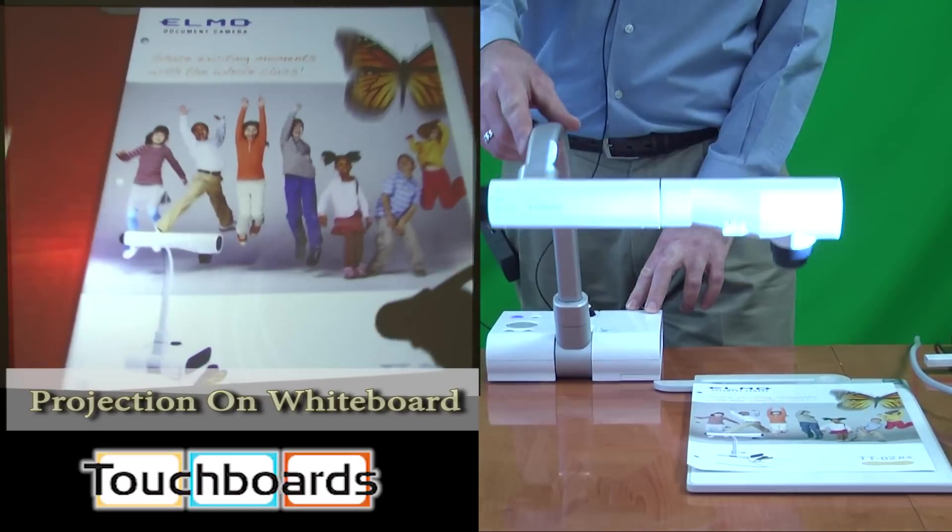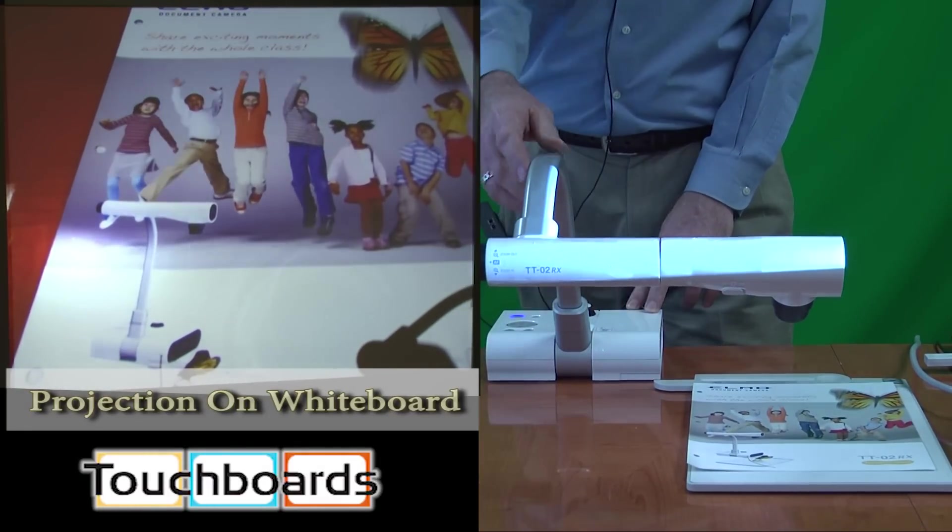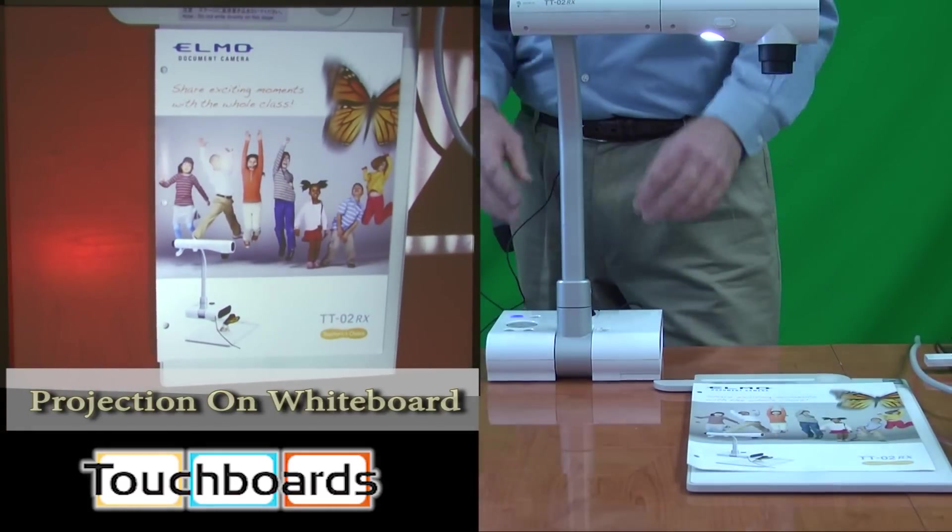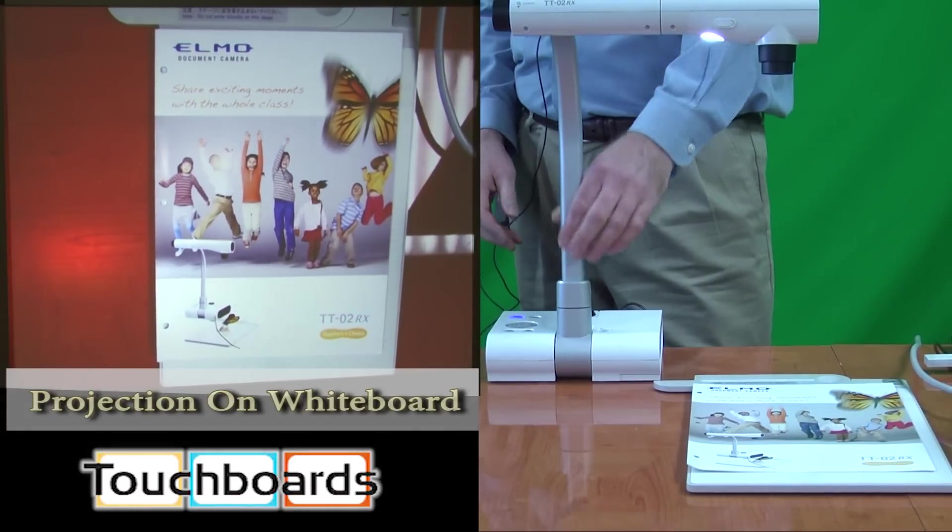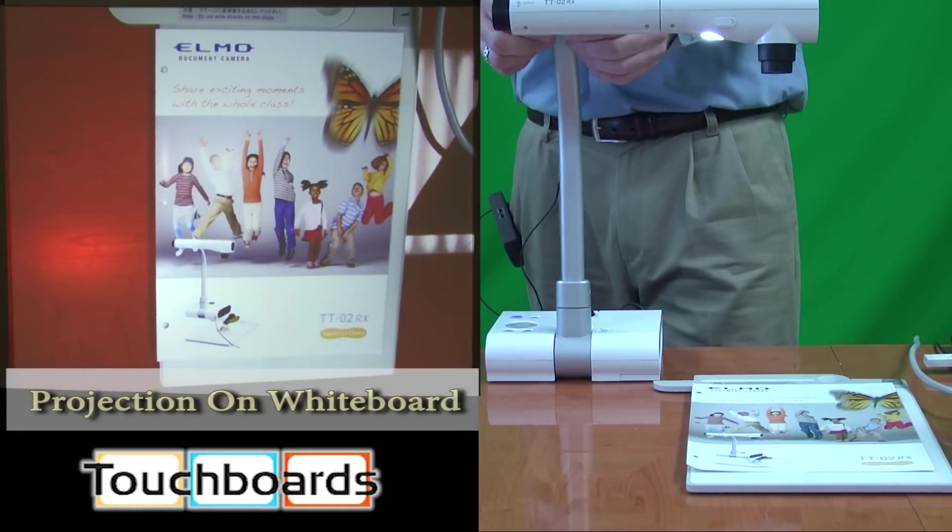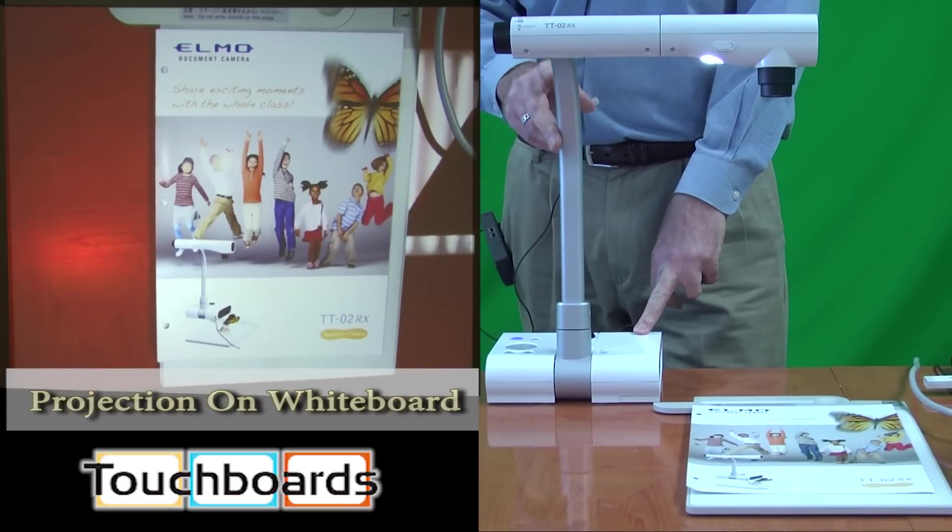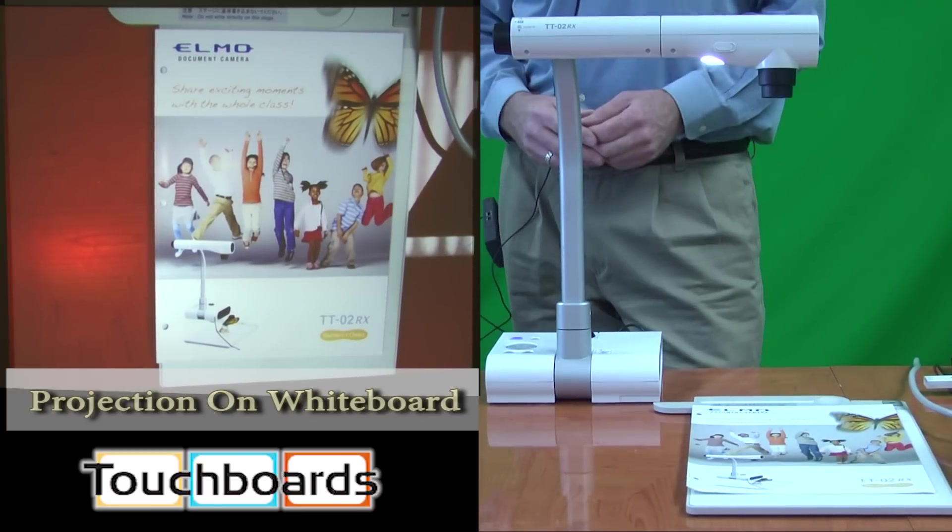As you can see, it comes with a solid arm that supports the camera. This is very useful in terms of not being able to be broken over time, whereas with the gooseneck variety that our competitors sometimes use, they do tend to break over a period of years.